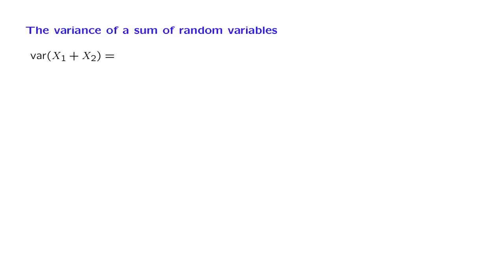If the two random variables are independent, then we know that the variance of the sum is the sum of the variances.